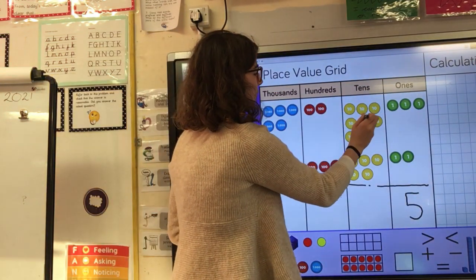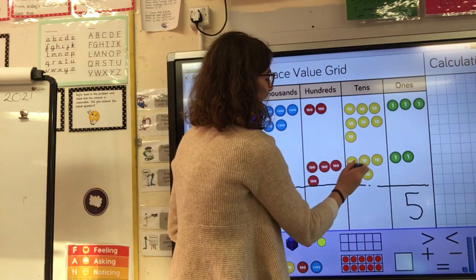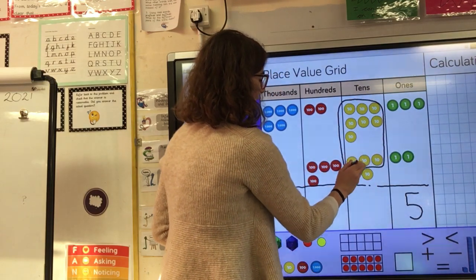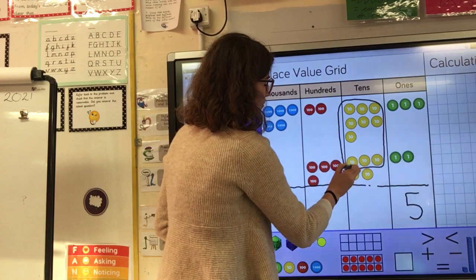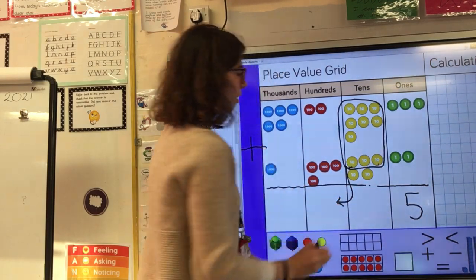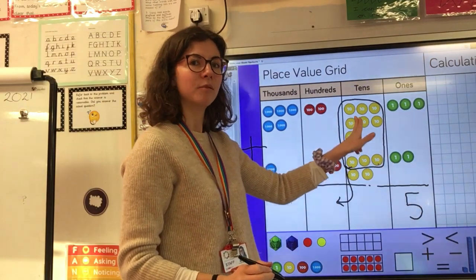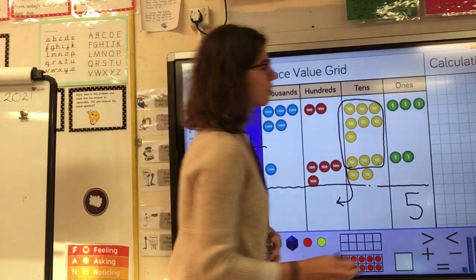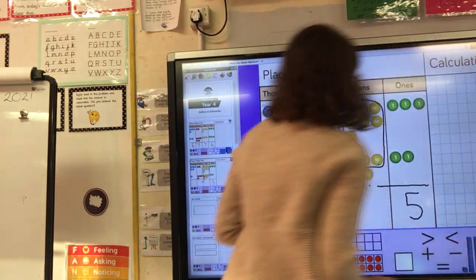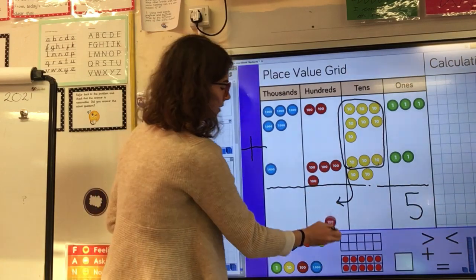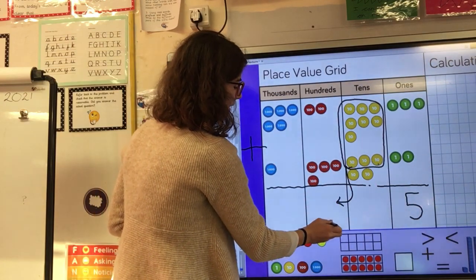What I need to do is I need to make a group of 10 counters. One, two, three, four, five, six, seven, eight, nine, ten. I'm going to group those 10 counters together and I'm going to move them into the hundreds column because 10 tens adds up to 100. So I move those 10s into the hundreds column and I can show that by getting a new hundreds counter and putting it underneath.